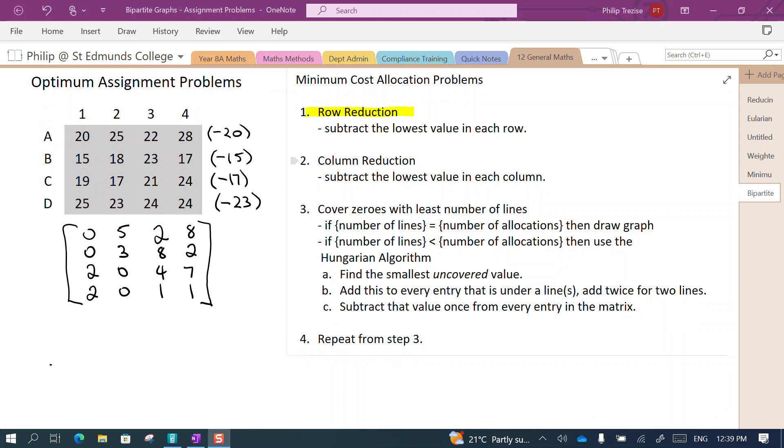Our second step is the column reduction, very similar process. We work on the new matrix that we've got here. We'll look for the lowest value in each column. Now if we go to the first column here the lowest value is a zero, and if we subtract zero nothing changes. The second column will be the same. With our third column the smallest value we have is a 1, so our first column won't change, the second one won't change. Now we'll subtract one from each of these entries, and same with the fourth column.